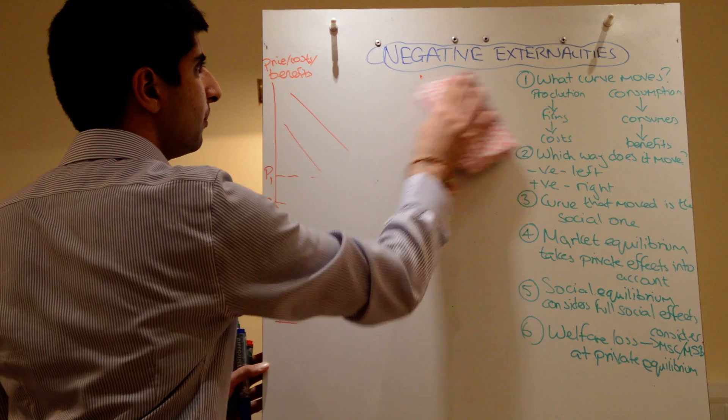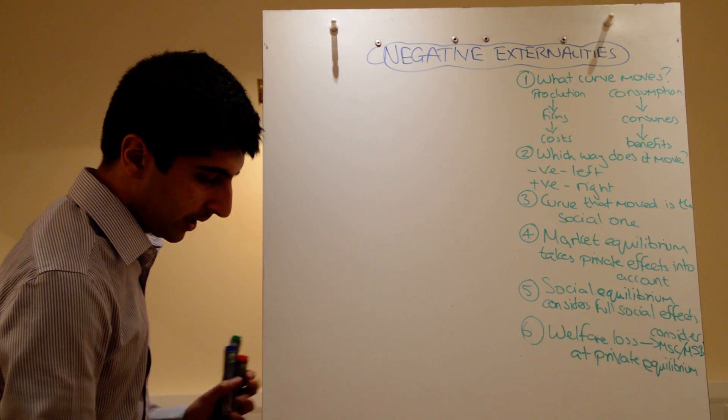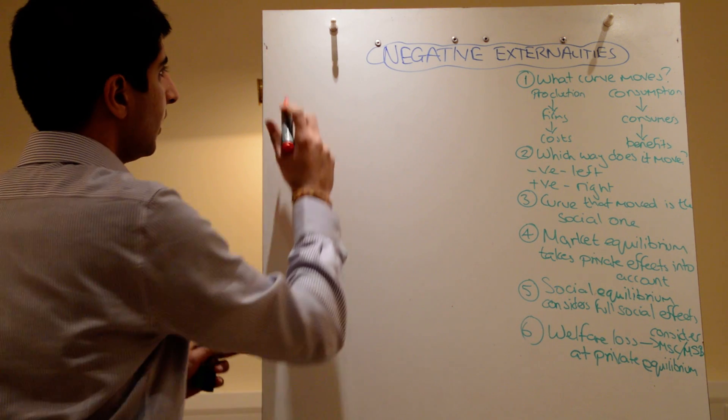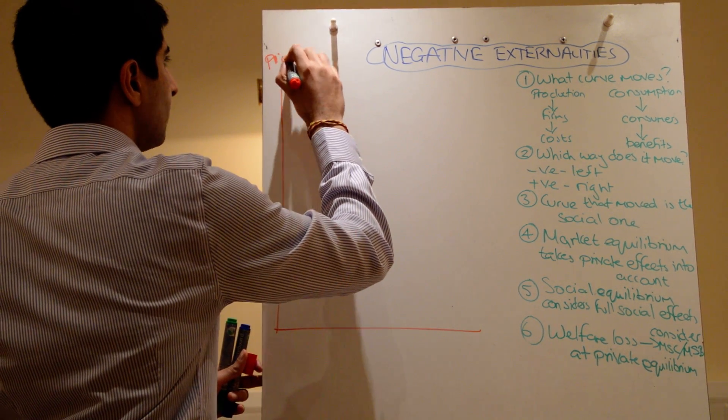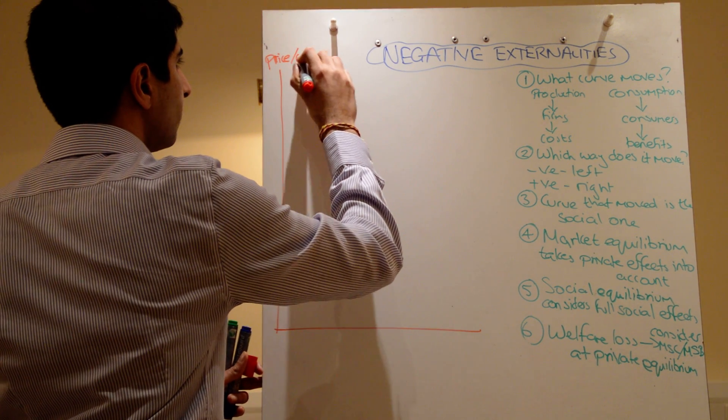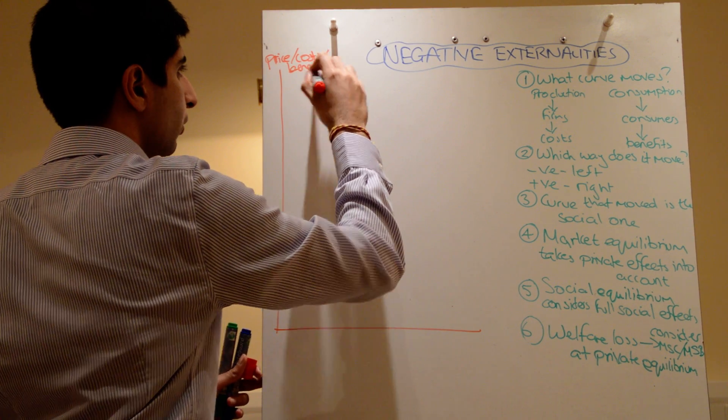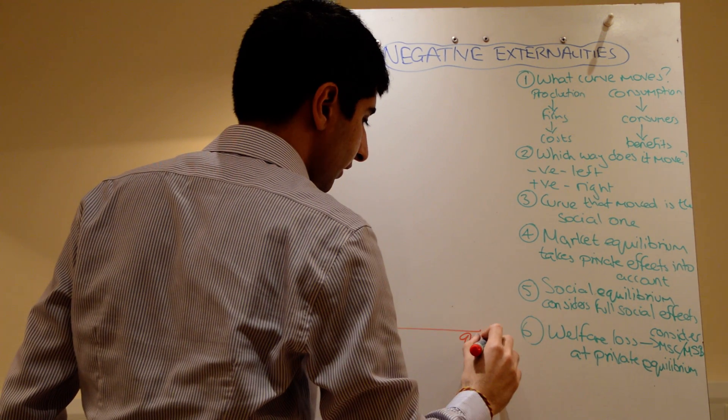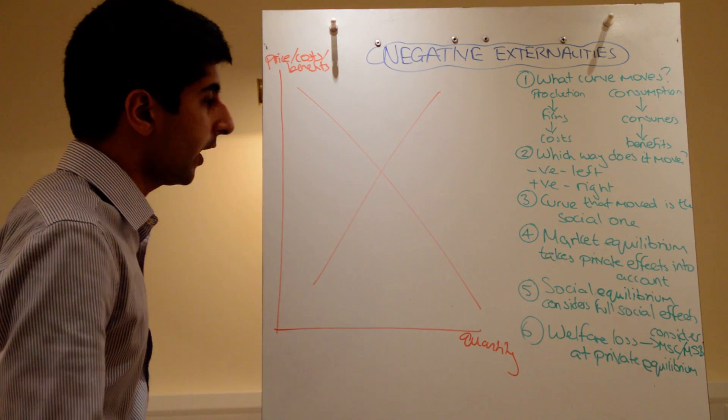What about a negative externality in production? Well, this now, hopefully, should be really simple if we go through the same basic technique. So let's do our diagram again. So at the top, y-axis, we've got price, costs, and benefits. We're now doing a welfare diagram, so you must label all three. And we have quantity on the x-axis. Again, we have a downward sloping and an upward sloping curve.